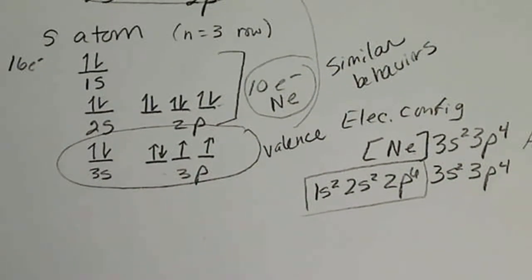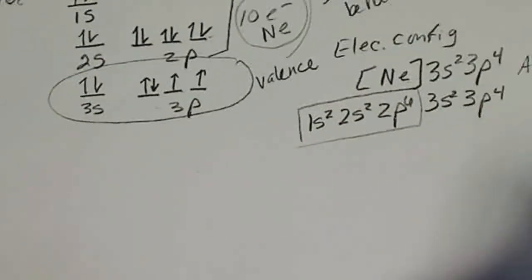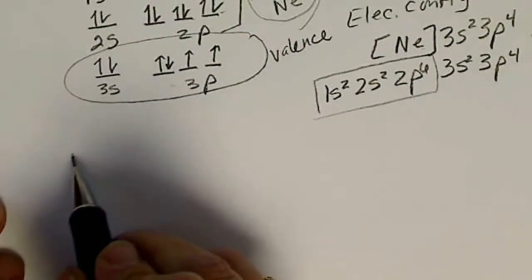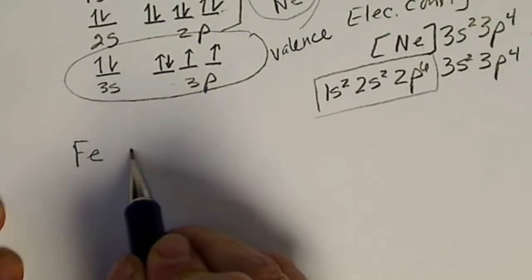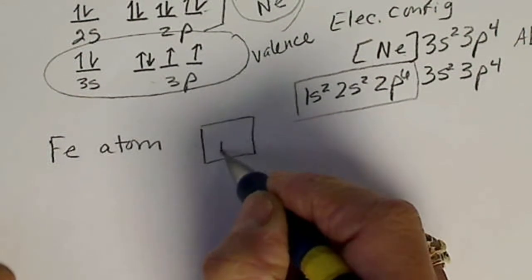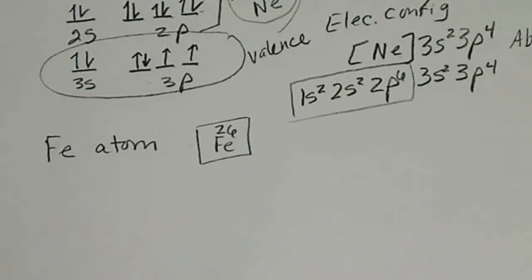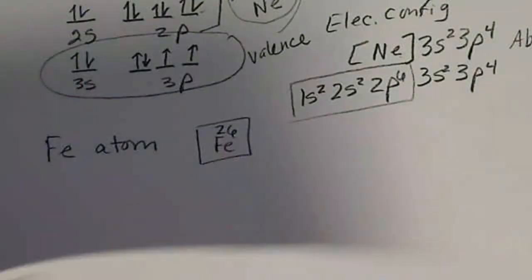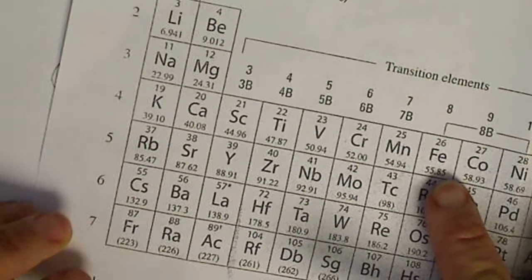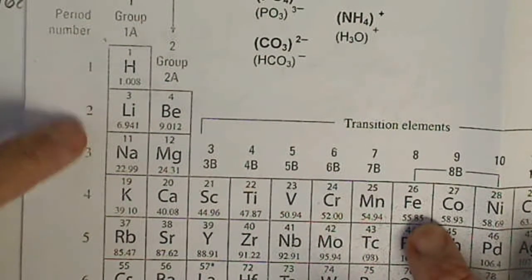I'm going to do an electron configuration for iron next. If we find iron on the periodic table, we'll see that it's element number 26, and it's on the fourth row of the periodic table (n equals 1, 2, 3, 4).